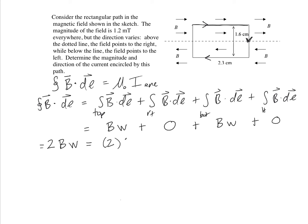We can actually put in our values here. We have 2, 1.2 milliteslas, and 2.3 centimeters. And we wind up getting, for our magnetic circulation, 5.52 times 10 to the minus 5 tesla meters.